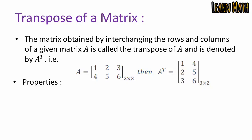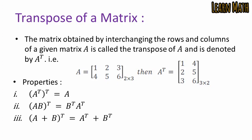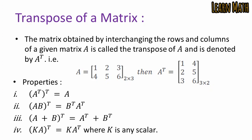Properties of the transpose: First, (A^T)^T = A. Second, (AB)^T = B^T A^T. Third, (A + B)^T = A^T + B^T. Fourth, (kA)^T = k A^T, where k is a scalar number.